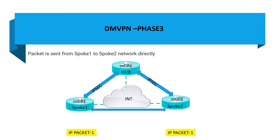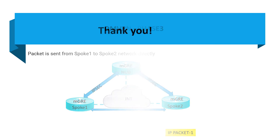In Phase 3, spoke-to-spoke tunnels can be built directly without needing to route that traffic through the hub. This is very straightforward and resolves the scalability and management issues. Thank you, and I will see you in the next video which is going to be Part 2.